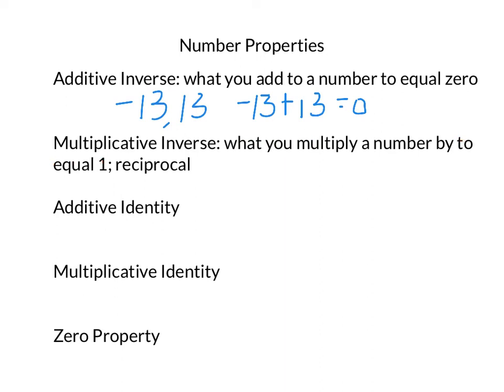The multiplicative inverse is what you multiply a number by to equal 1, also known as the reciprocal. So, as an example, if we have 3 fourths, the multiplicative inverse would be 4 thirds, because 3 fourths times 4 thirds equals 1.